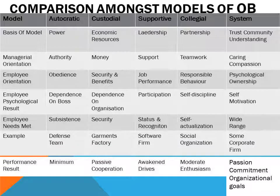We can take examples: the defence forces as an example of the autocratic model, a garment factory for the custodial model, a software firm for the supportive model, a social organization for the collegial model, and some corporate firms that take care of employees — like Tata — as a very good example of the systems model.